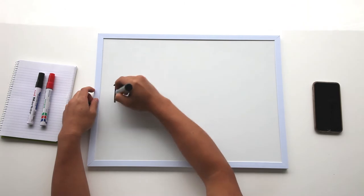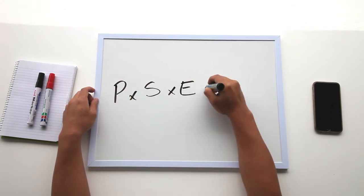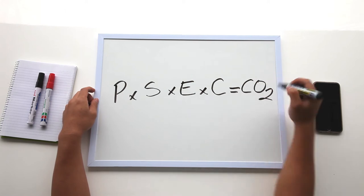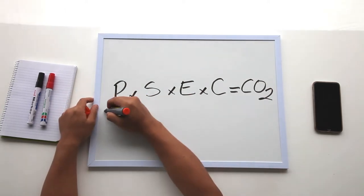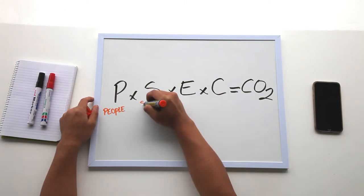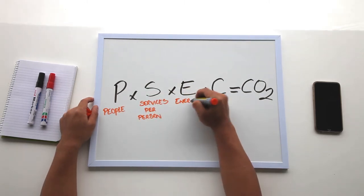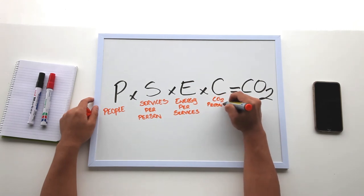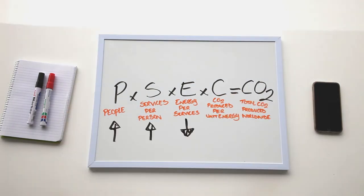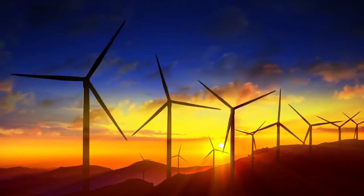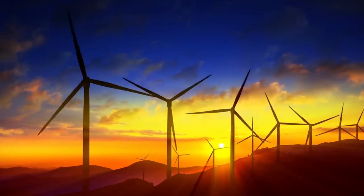The Bill Gates climate change equation, also known as the KR identity, can be used to estimate global carbon emissions. This equation breaks down carbon emissions into several factors: P, the world's population; S, services; E, energy required for those services; and C, the carbon dioxide produced from that energy. The aim of the equation is for both sides to equal zero, thus reaching the aim of zero carbon emissions. The only way this is possible is for a component of the equation on both the left and the right side to equal zero, which can only be achieved through the use of renewable energies so that carbon dioxide is no longer produced as a by-product. This equation is particularly relevant due to the growing concern and awareness of global warming and climate change.